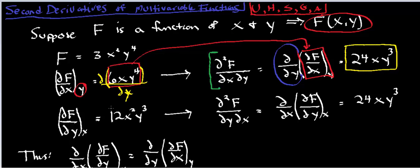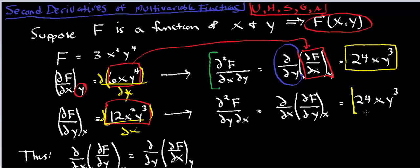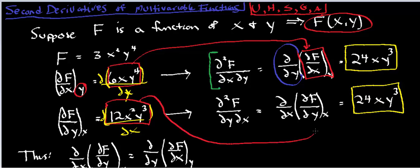Now I take the expression from differentiating f with respect to y first — that was 12x squared y cubed — and differentiate it with respect to x. The 12y cubed are now constants, and the derivative of x squared is 2x. Multiplying gives 24xy cubed. This is written as d squared f over dy dx: differentiating f with respect to y first, holding x constant, and then differentiating with respect to x.